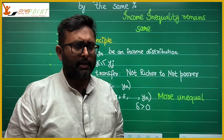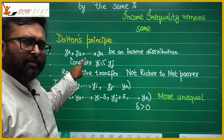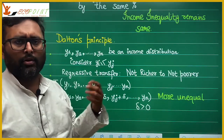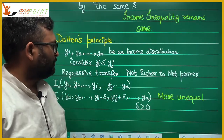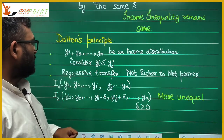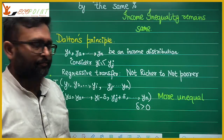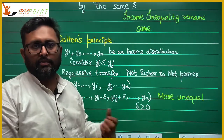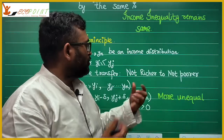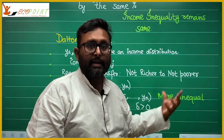Dalton's principle: suppose you have an income distribution where individual one earns Y1, individual two earns Y2, and so on, all arranged in ascending order from lowest to highest. Say my income is 100, yours is 200, and so on up to 1000. Now suppose individual I has income less than or equal to individual J, and we do a regressive transfer — a transfer from the poorer individual going to the richer individual. That is a regressive transfer: you take income from someone who doesn't have much and give it to someone who is already rich.